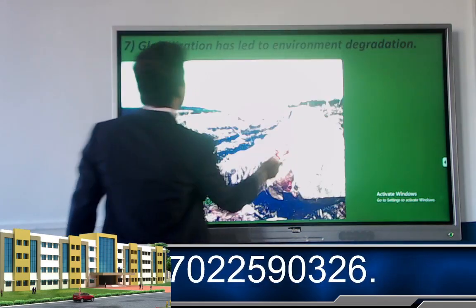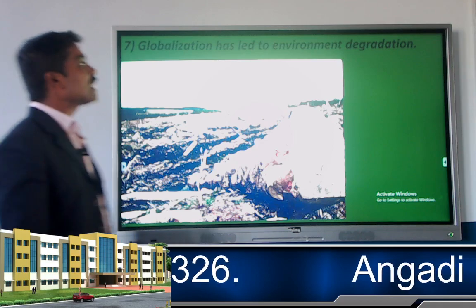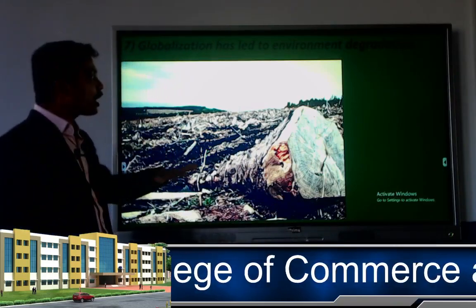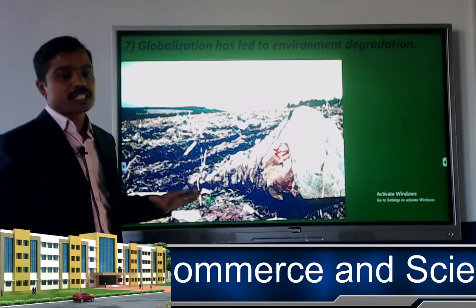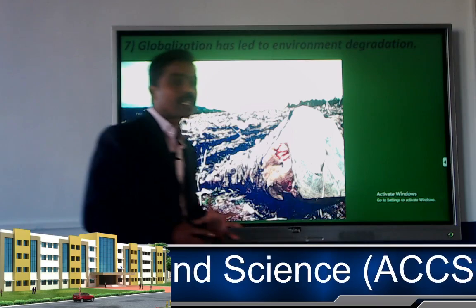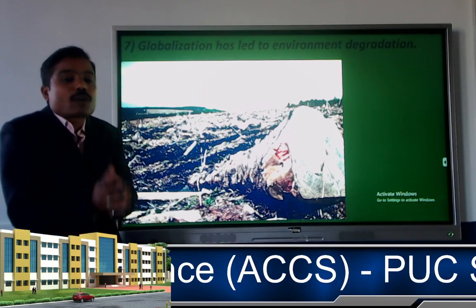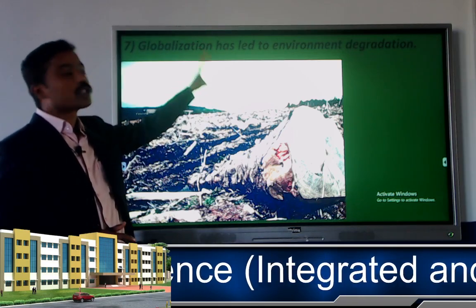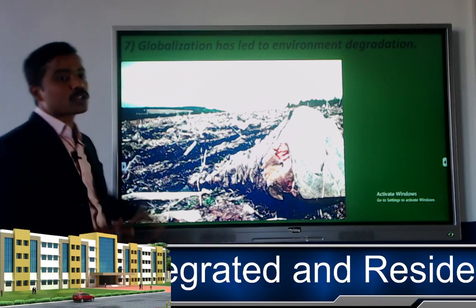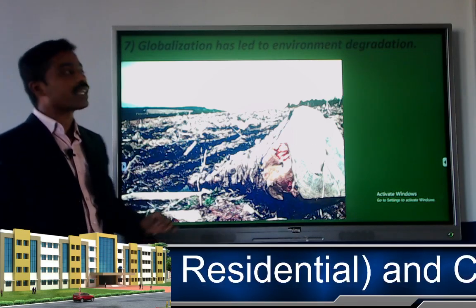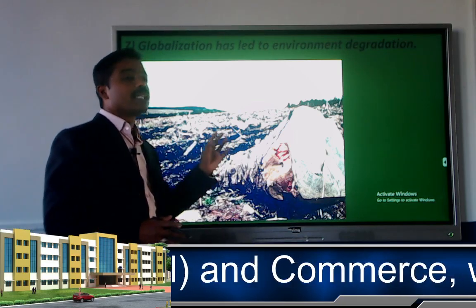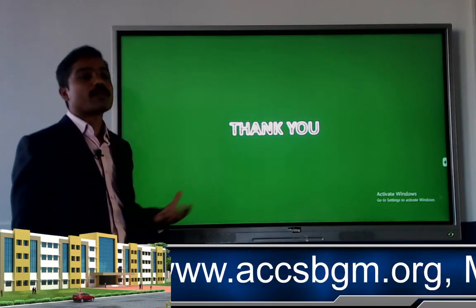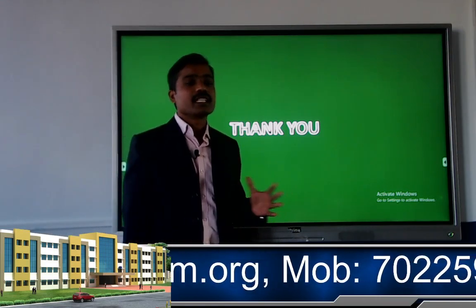The seventh disadvantage is that globalization has led to environmental degradation. To establish a company or start an industry, forests are cleared to make way for multinational companies, as cities are already full of buildings and offices. The remaining land lies in forest areas, which are degraded for globalizing businesses. This is all about globalization of business. Thank you very much.